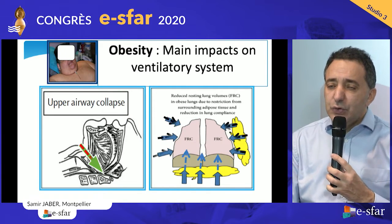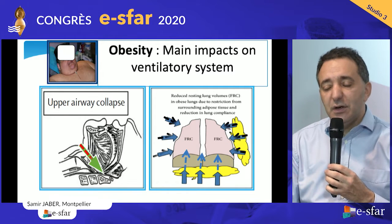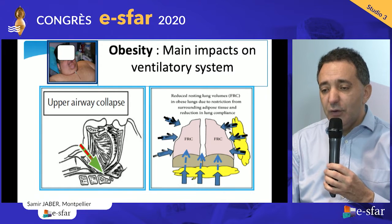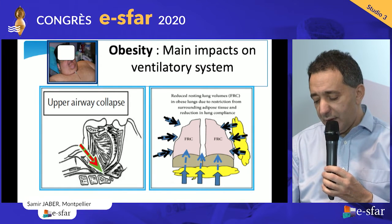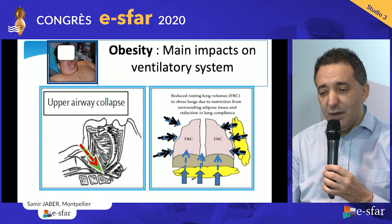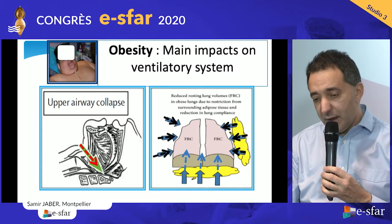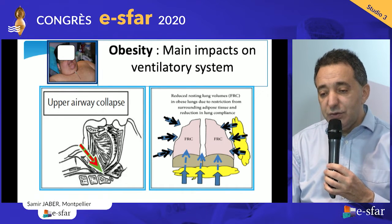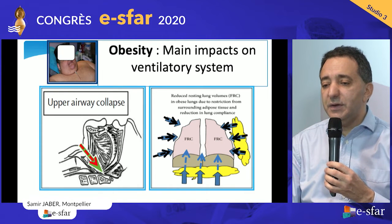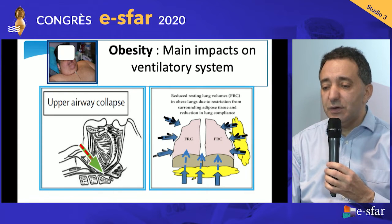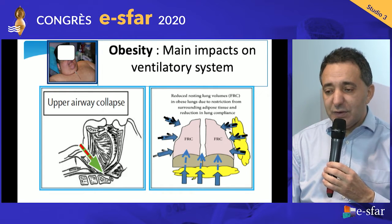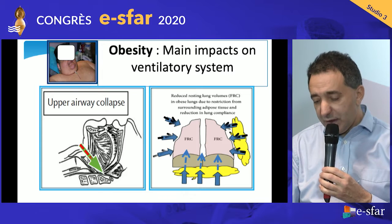Two major modifications of the respiratory system in obese patients should be known. First, upper airway collapse is increased due to the morphology of the obese patient, but also due to anesthetic drugs, which increase collapse through respiratory depression.